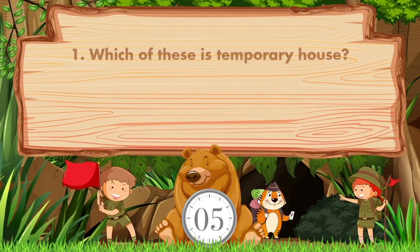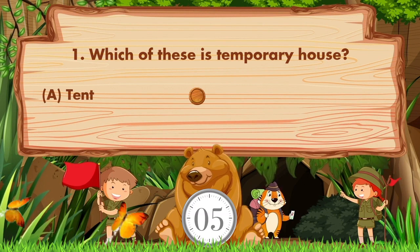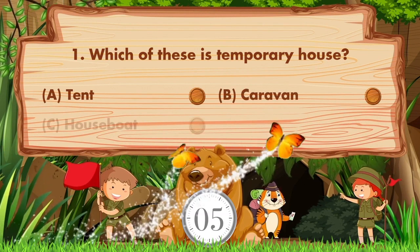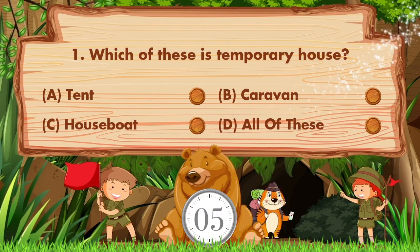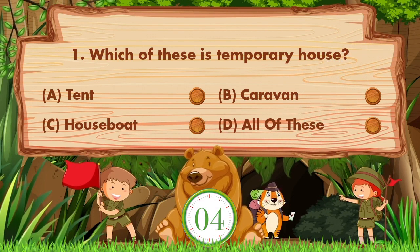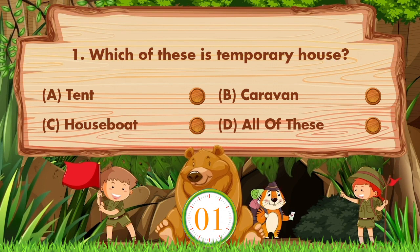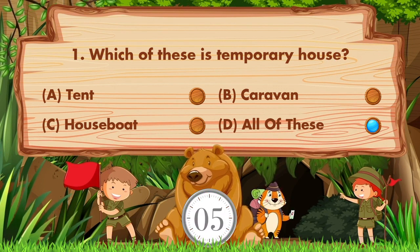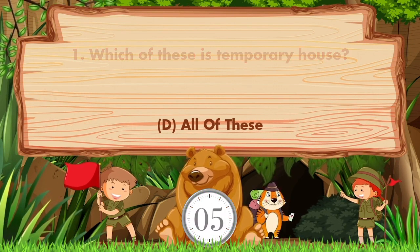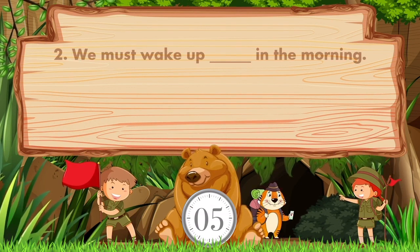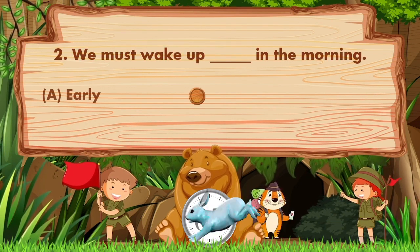Which of these is a temporary house? Option A is a tent, B caravan, C houseboat, D all of these. Answer is option D, all of these.